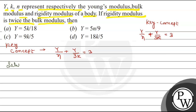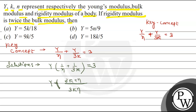We will use this relation. Factoring out Y, we get Y into (1/eta + 1/3K) equals 3. Taking LCM, this becomes Y into (3K + eta) / (3K·eta) equals 3.